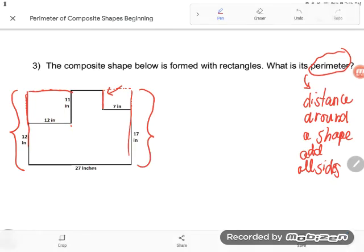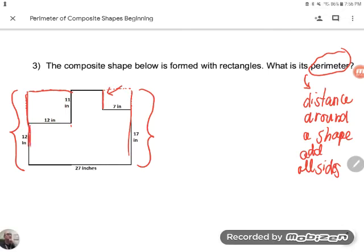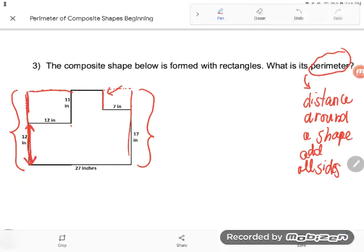They would be equal in length because opposite sides of a rectangle are always equal in length. So this is interesting because one of these sides I know how long it is, that's this one. Let me show you. I know how long this piece is. This piece is 12 inches, it's marked.